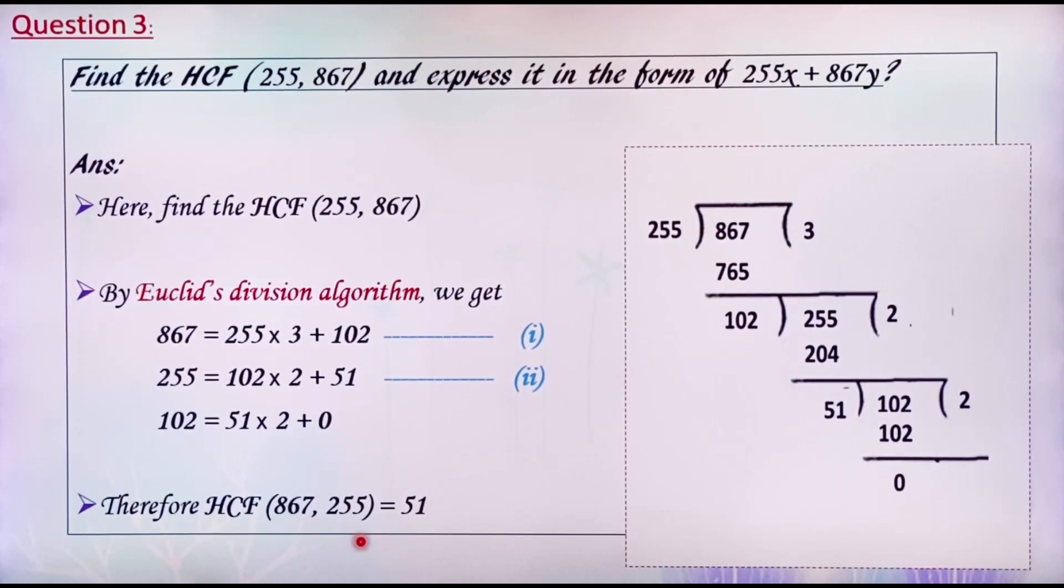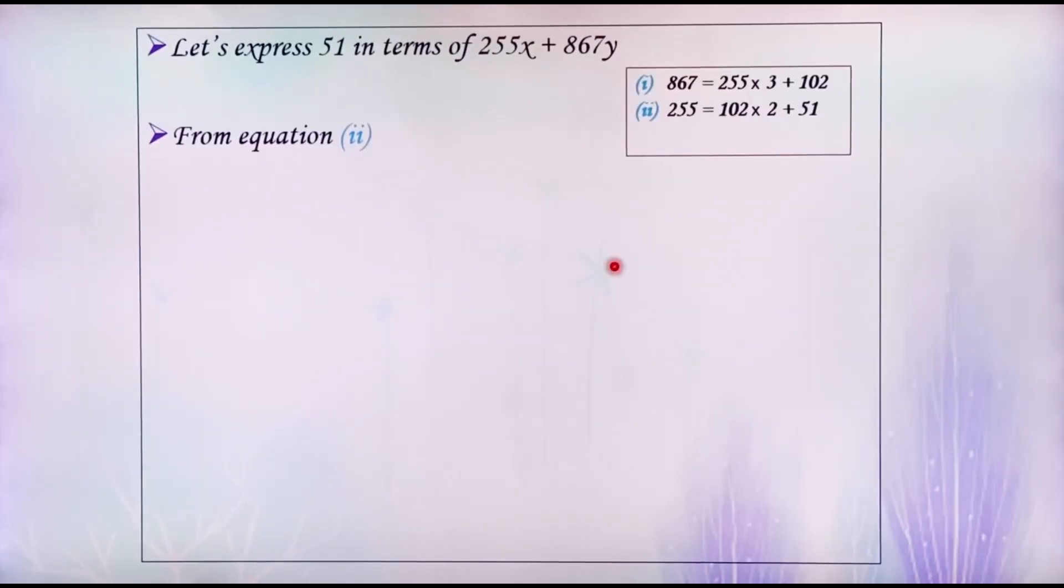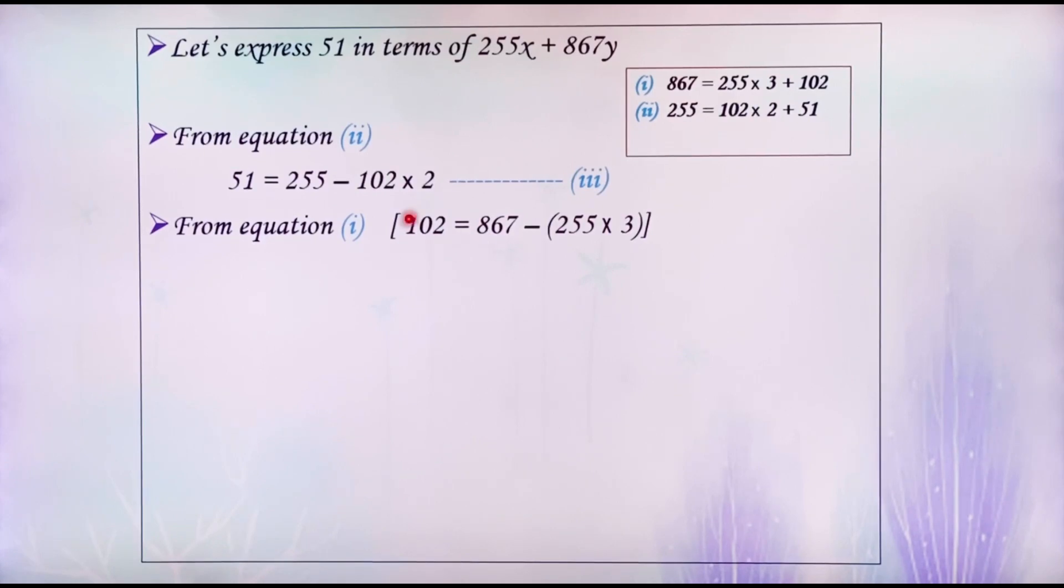Now, we have to express 51 as 255x plus 867y. See the second equation. There, 51 is the remainder. Rearrange the equation and write as 51 equals 255 minus 102 into 2, which is taken as equation 3. Similarly, from equation 1, we get 102 equals 867 minus 255 into 3. So, insert this result in equation 3. We get 51 equals 255 minus (867 minus 255 into 3) into 2.